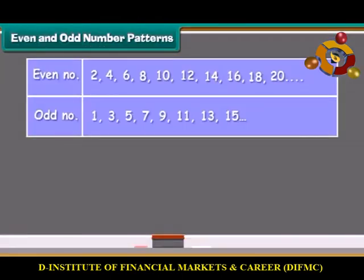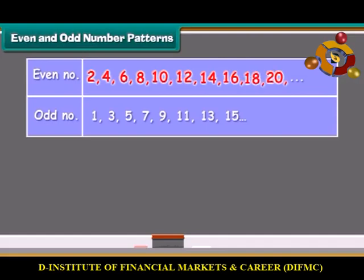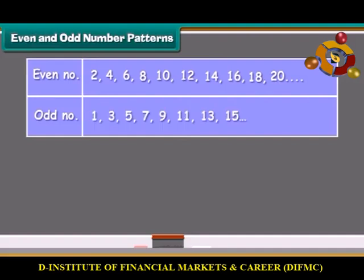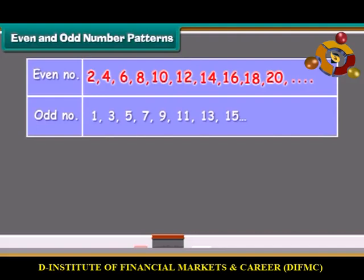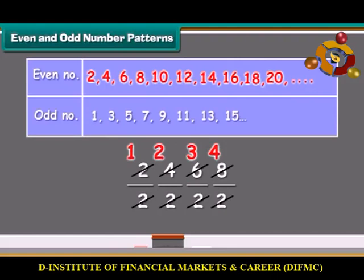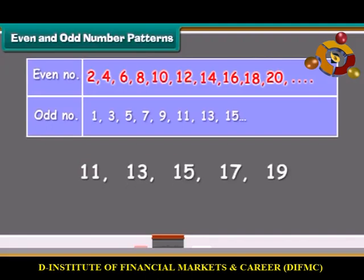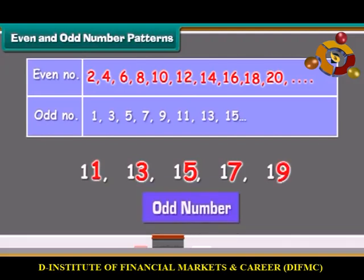Look at the numbers: 2, 4, 6, 8, 10, 12, 14, 16, 18, 20, and so on. And 1, 3, 5, 7, 9, 11, 13, 15, and so on. The first series are called even numbers. Even numbers are divisible by 2 and end with 0, 2, 4, 6, or 8. Numbers ending with 1, 3, 5, 7, or 9 are called odd numbers. In both even and odd numbers, we skip count by 2's.